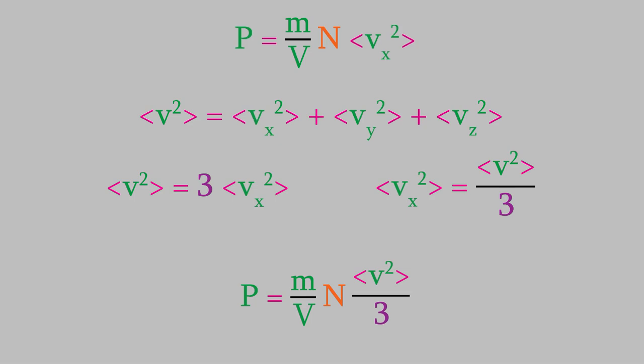Unfortunately, not everything in this equation would be easy to measure. We can measure the pressure, the volume, and the mass of the particles, but n, the number of particles, is difficult to measure because they're so small. And v squared is hard to measure too. How can we change this equation to make it easier to use in an experiment? The secret is to remember the equation for kinetic energy that you probably learned early in your physics course.